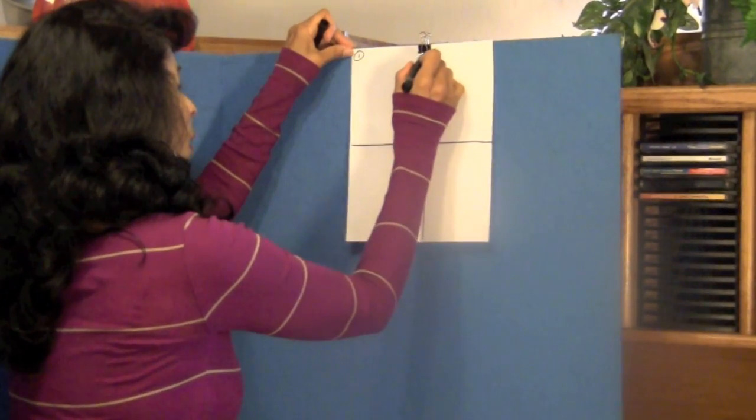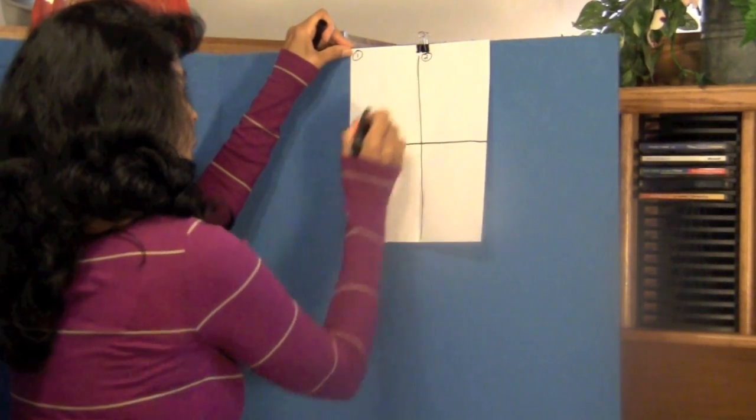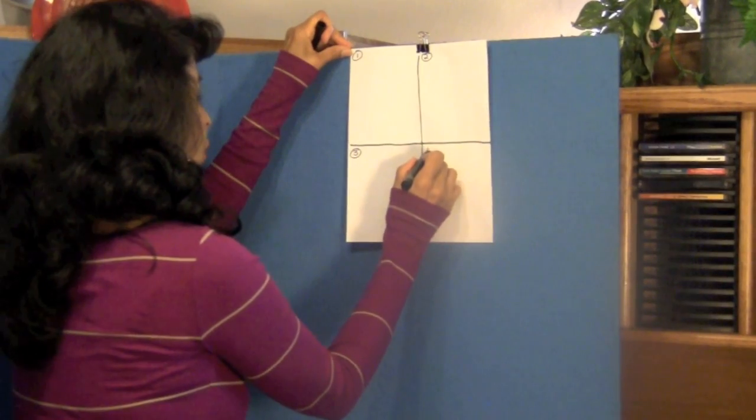Then number your boxes. This is box number one, box number two, box three, and box four.